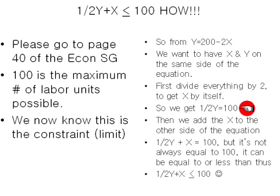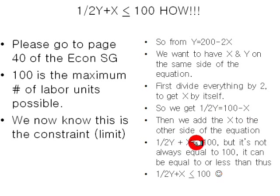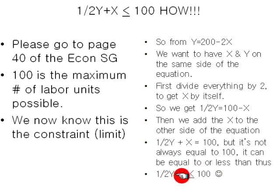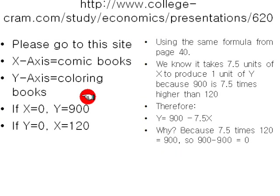Then we're going to want X and Y on the same side of the equation. So using algebra, we add X over to get half Y plus X equals 100. But remember, it's not always equal to 100. It's a production possibility frontier, so because it's a possibility, it has to be equal to or less than. It can't be greater than because that's outside of the transformation curve.